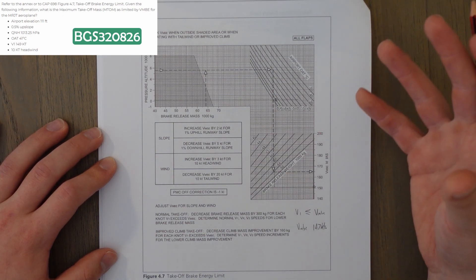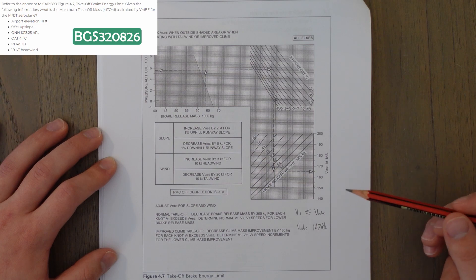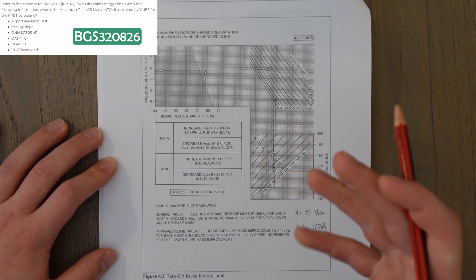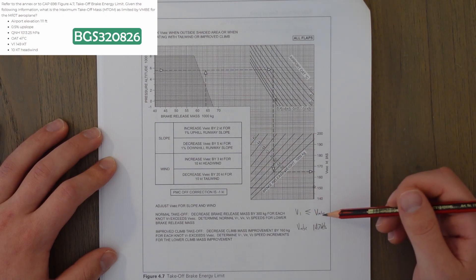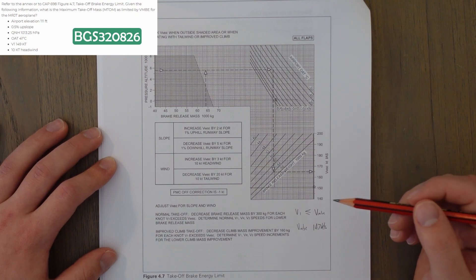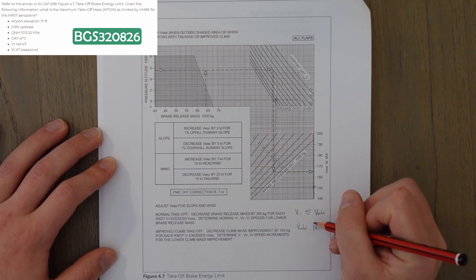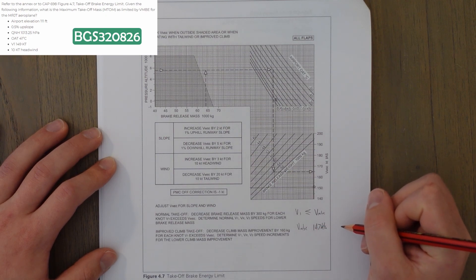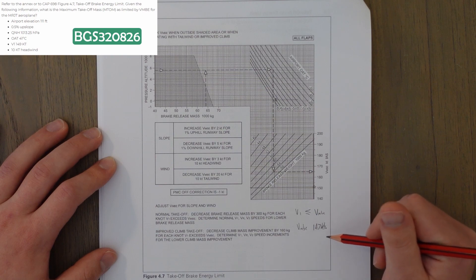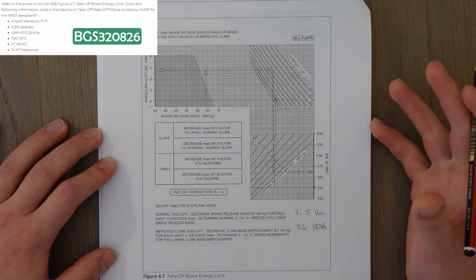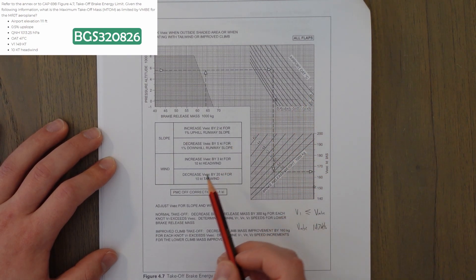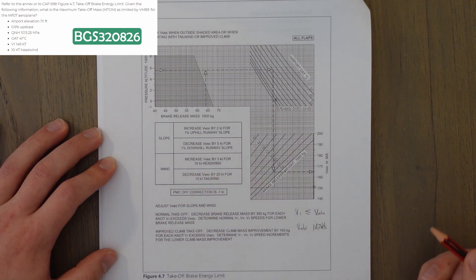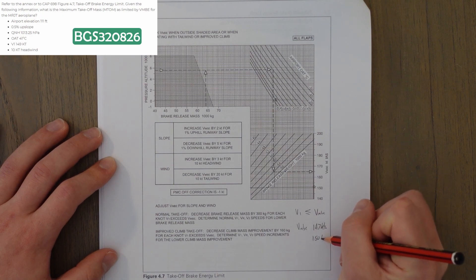But what we can do is use our knowledge of the Class A regulations. And we know that V1 has to be less than or equal to VMBE, because we have to be able to stop without going over the speed that our brakes can handle, basically, which is what this restriction means. So, therefore, we know that our VMBE has to be at least 147 knots. It could be higher, but it has to be at least 147 knots. And then what we're going to do is we're going to further refine the VMBE figure. So, a 10 knot headwind, as we can see here, means that we increase VMBE by 3 knots. So, that means a new VMBE of 150 knots.